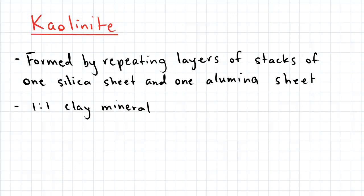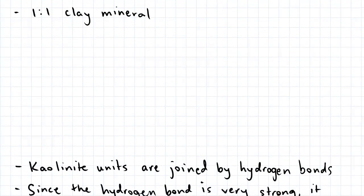Schematically this is what kaolinite looks like. So we have an alumina sheet being bonded to a silica sheet. And this pattern essentially repeats.